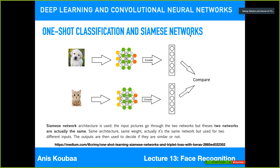We call them Siamese — like twins. You provide an input image to each network, and each transforms it into a one-dimensional embedding vector. Then you compare the two embeddings, for example by computing the difference. If it is smaller than a certain distance threshold, the images are the same; if greater, they are different. So the network is used for creating embeddings and then comparing between them.